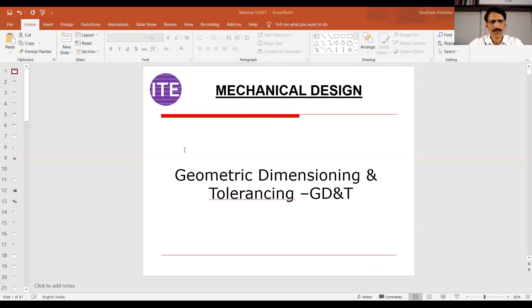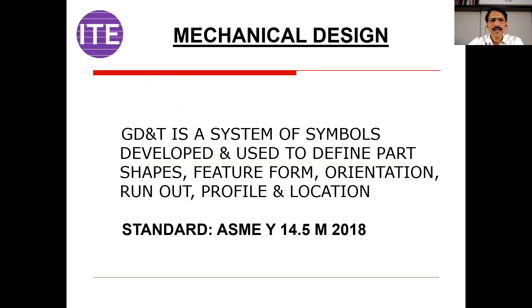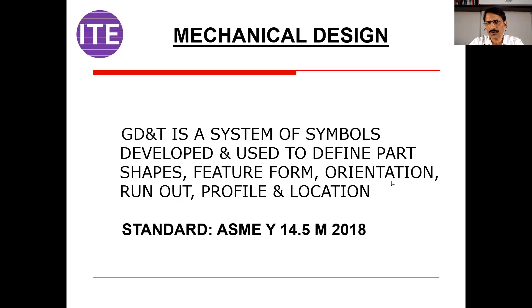Today's session we are going to learn all about Geometric Dimensioning and Tolerancing. GD&T is a system of symbols developed and used to define part shapes, feature form, orientation, runout, profile, and location. These are the various categories in GD&T and the standard followed is ASME Y14.5M 2018 — American Society of Mechanical Engineers — and most companies follow this standard.